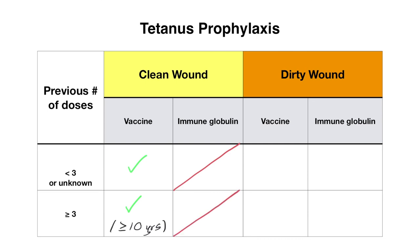The situation is a little different with a dirty wound. If the patient received less than three doses, or it's currently unknown, that patient would receive both the vaccine and immune globulin — this is actually the only situation in which a patient receives immune globulin. If the patient received at least three doses, they receive the vaccine only if the last dose was given five or more years ago; otherwise, they do not receive immune globulin.